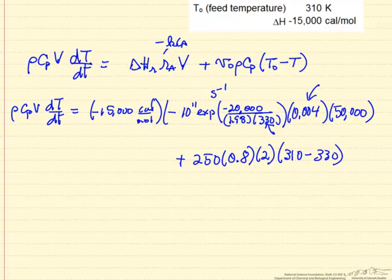We put in consistent units. This is moles per centimeter cubed, this is centimeter cubed, and then likewise in the second term, this is the feed, and this is the initial temperature in the reactor. And now the volumetric flow rate, and heat capacity, and density in the appropriate units.